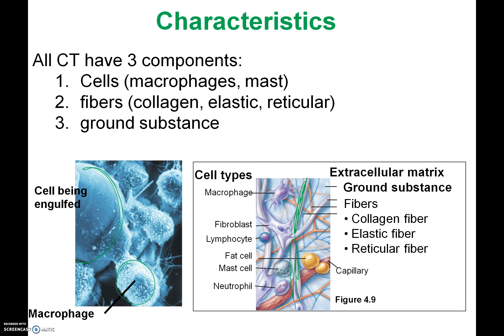The last thing that all connective tissue has is the ground substance. The ground substance is part of the material that makes up the extracellular matrix — it's like the background material, or the glue that's holding all the cells and fibers in place. The fibers and ground substance combined make up the extracellular matrix.